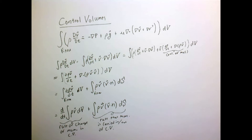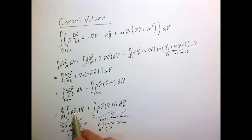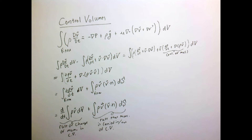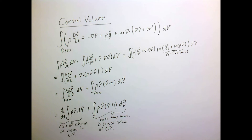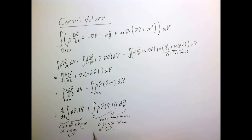The first term seems relatively logical: if we take the integral of the velocity field times the density over the volume, that gives us the momentum. So the rate of change of what's inside our box is the rate of change of momentum in our box. The second term takes a little getting used to and requires care with signs.